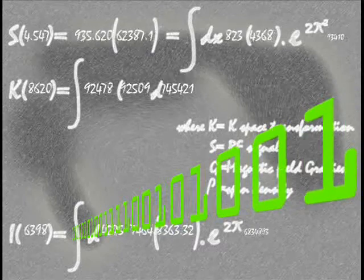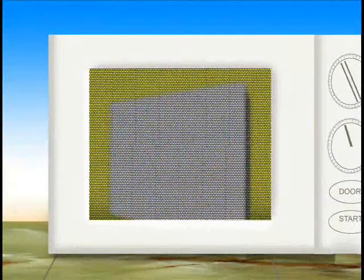Combining all the data from all the return signals, the computerized calculations generate a stream of numbers to construct a computer model of hydrogen density. This density map shows the relative amount of water in tissues, and therefore muscle, bone, blood vessels, and other tissues can be seen clearly.